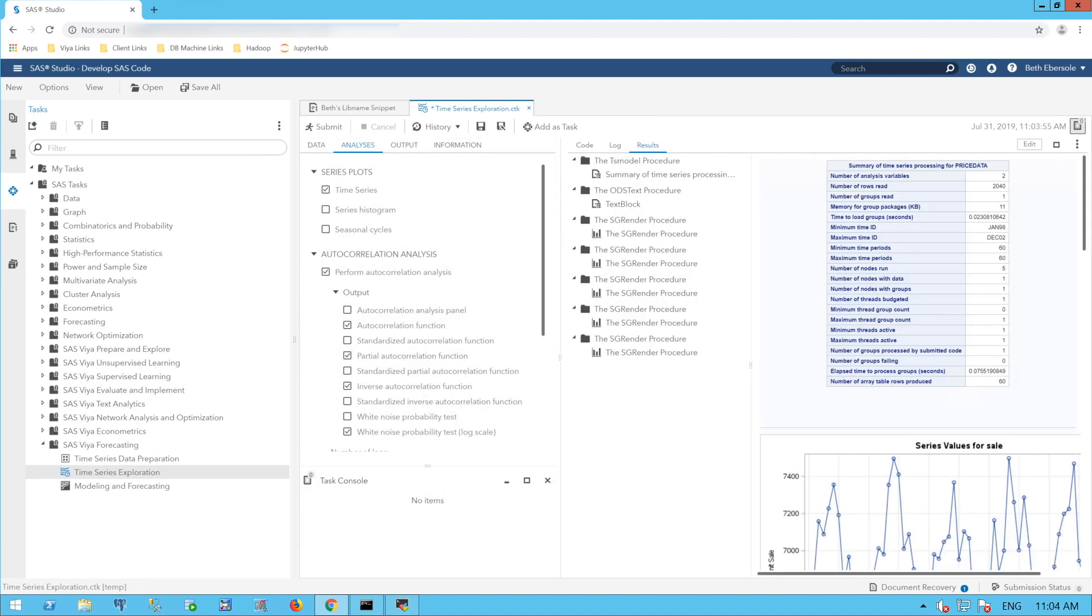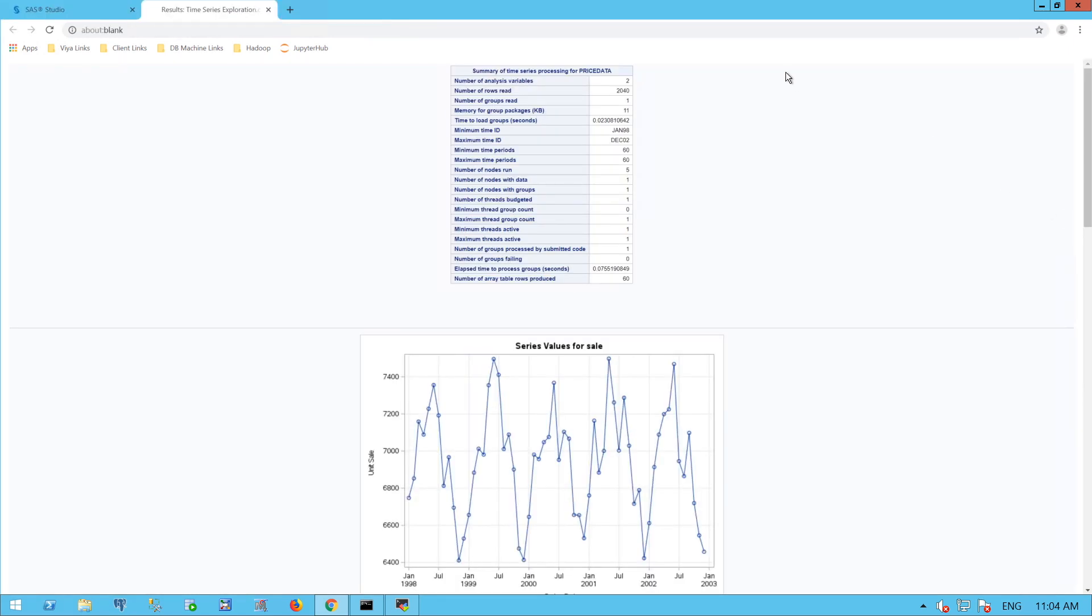Here are my results, which I can look at in a larger window by going to this snowman, or three dots above each other. And I'll open a browser tab for my results. The first thing I see is a table. For example, the number of analysis variables. I had one dependent and one independent variable. The number of rows read. Things like the minimum time ID and the maximum time ID. So you see I have quite a bit of information here.